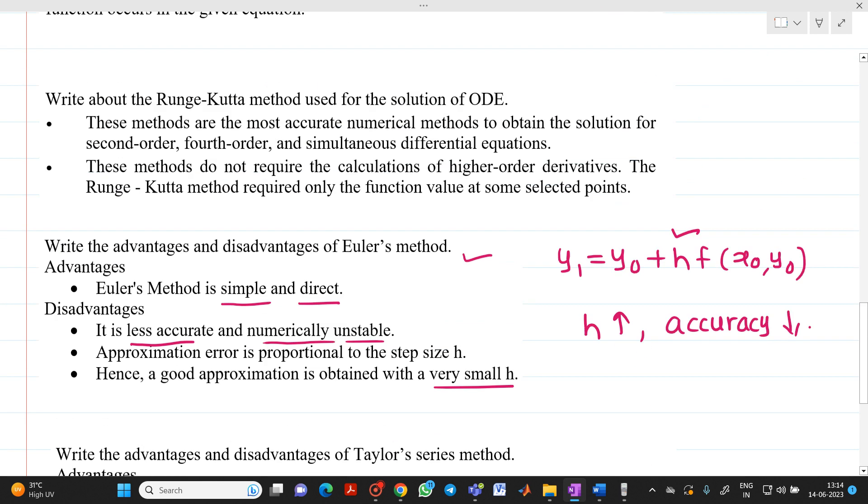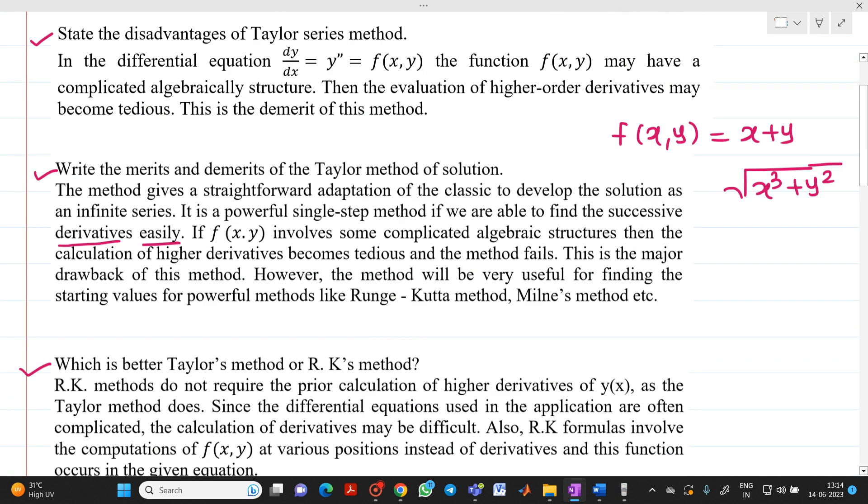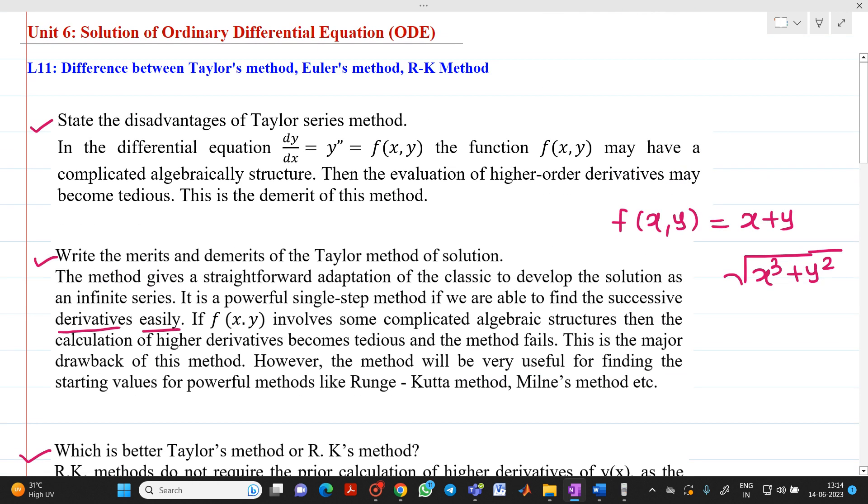This video tells about what is the basic difference between RK method, Euler's method, and Taylor series method. It is observed that if you prioritize the methods, which will be easy: first, the easiest method is RK method, wherein there is no need to find any derivatives. Second is Euler's method, wherein lesser the value of h, you will get good accuracy. And third, the most difficult method, if a function is very complex like this, is Taylor series method, because in this method we have to find higher-order derivatives.